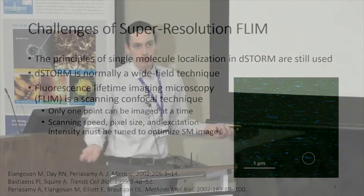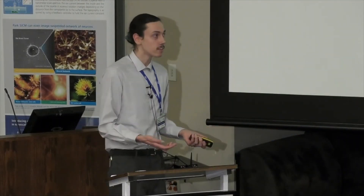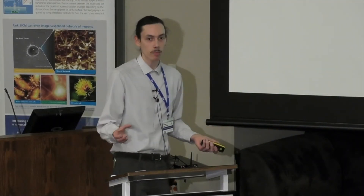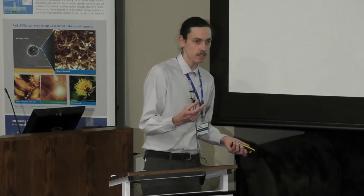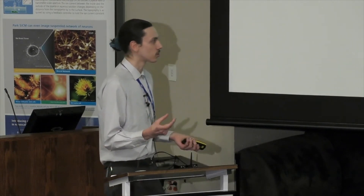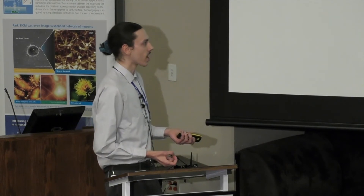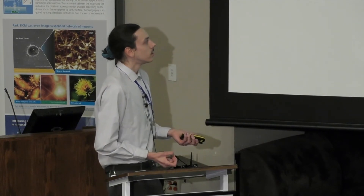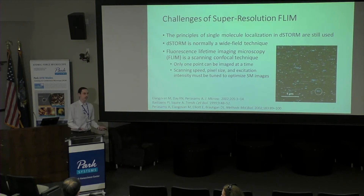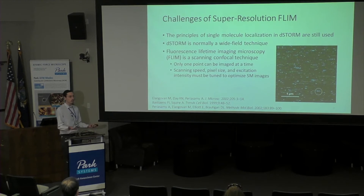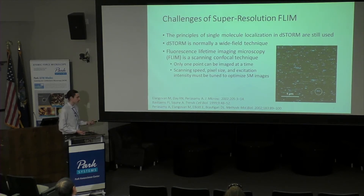The problem we run into with high scanning speeds, small pixel sizes, or high excitation intensity is that your molecule will turn off while you're imaging part of it, and you will get an incomplete point spread function. An incomplete point spread function cannot be fit, and you can't get proper localizations — it's really important to know precisely with certainty where the emission happened. In order to make this work, we need to optimize scanning speed, pixel size, and everything else so that we are getting nice single molecule images with the confocal scanning setup.